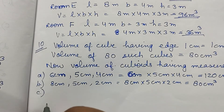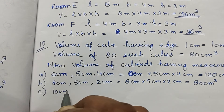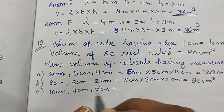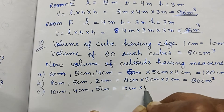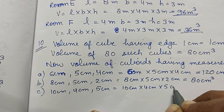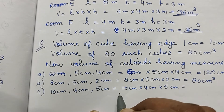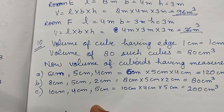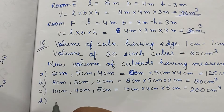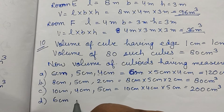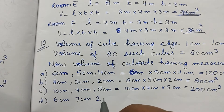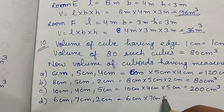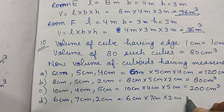Cuboid C: dimensions are 10 cm, 4 cm, and 5 cm. Volume is 10 into 4 into 5 — 4 times 5 is 20, and 20 times 10 is 200 centimeter cube. Cuboid D: dimensions are 6 cm, 7 cm, and 2 cm. Volume is 6 into 7 into 2.